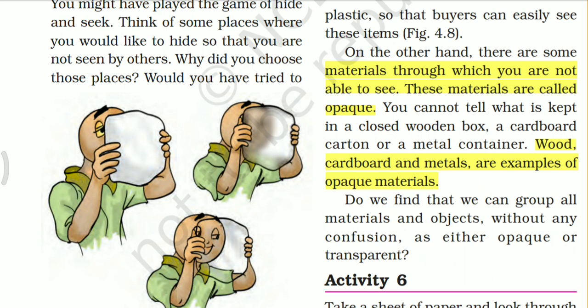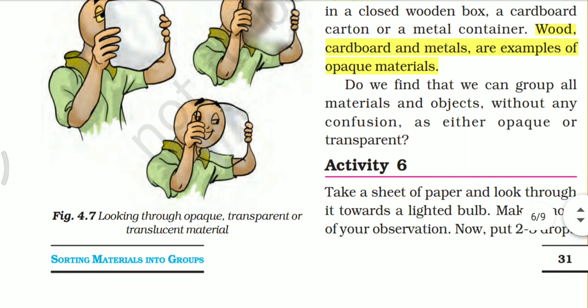Wood, cardboard, and metal are examples of opaque materials. You cannot tell what is kept in a closed wooden box, a cardboard carton, or a metal container. Do we find that we can group all materials as either opaque or transparent?